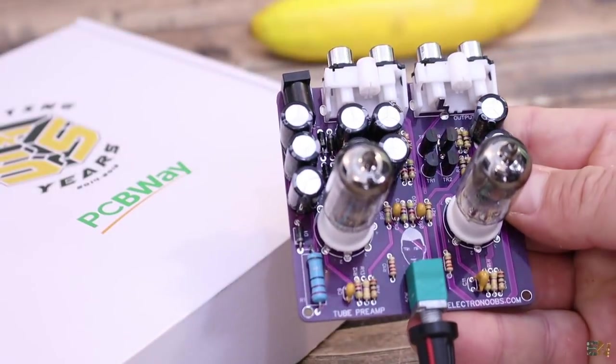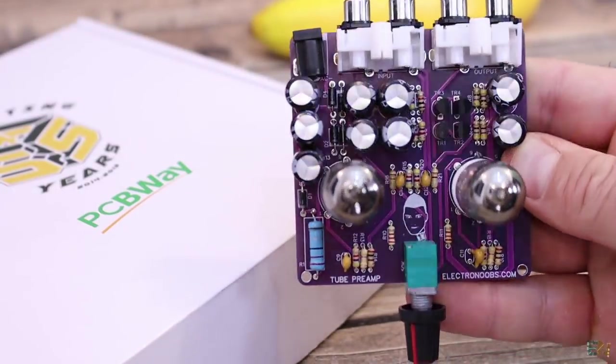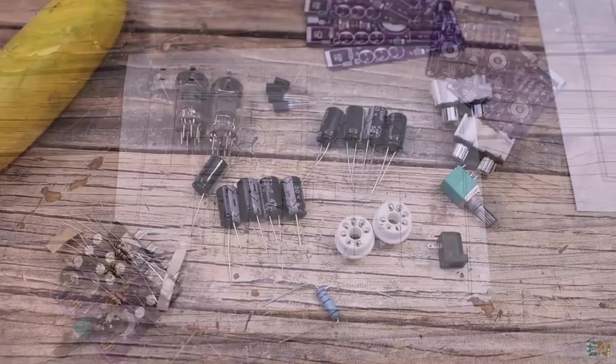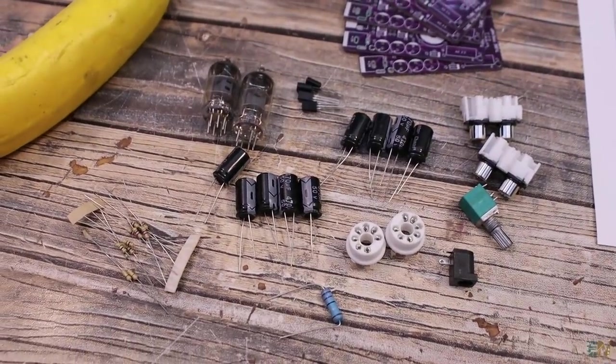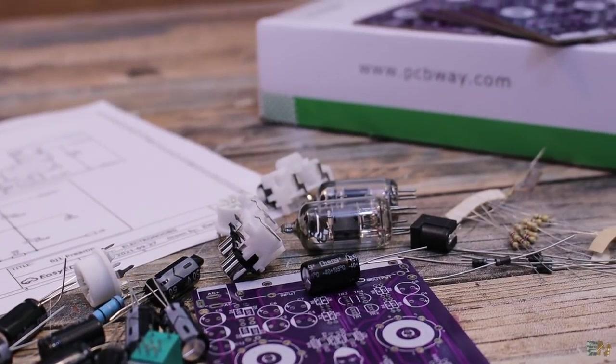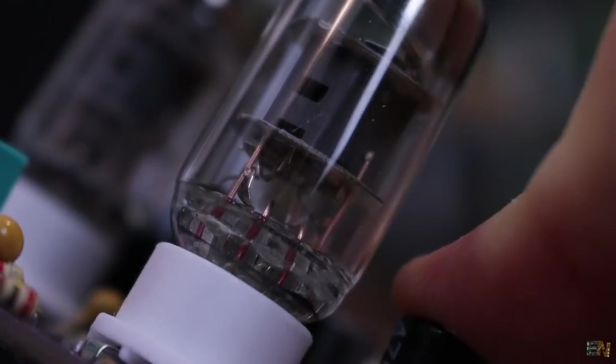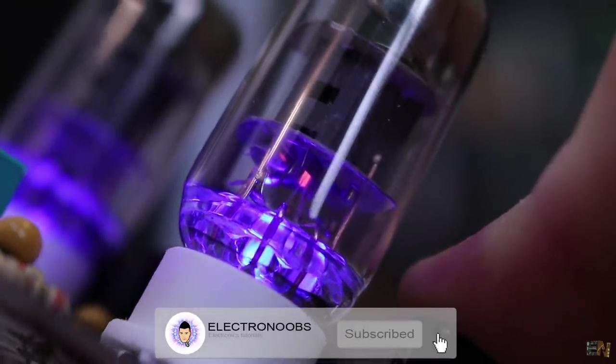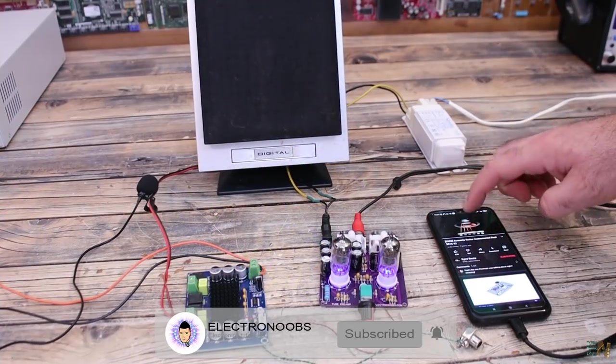So guys, that's how I've made my own tube based preamplifier. So what do you think? It's quite interesting, right? It should give your music more harmonics and more smoother sound. You have all that you need to make this project below in the description. And if you like this video and you have learned something new, consider giving me a like or comment below. Thanks again and see you later guys.